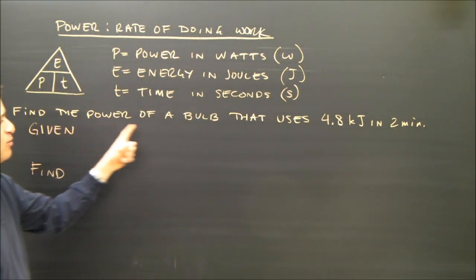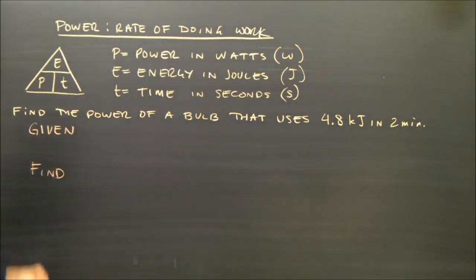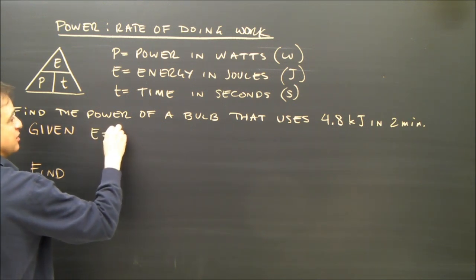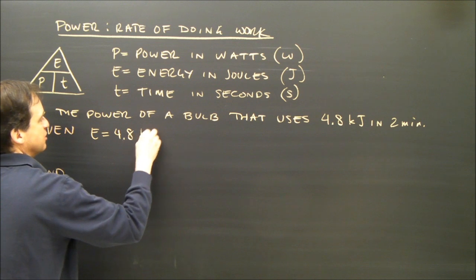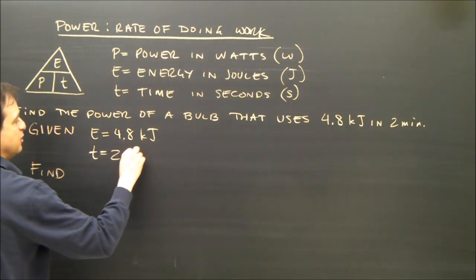So let's try, find the power of a bulb that uses 4.8 kilojoules in 2 minutes. I've got to write down my givens. I'm given that the energy is 4.8 kilojoules and the time is 2 minutes.